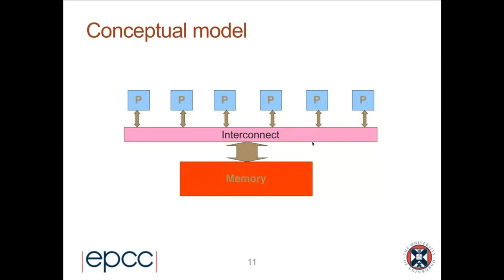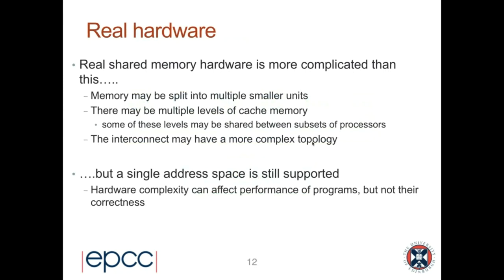The simple conceptual model is that we have a collection of processors with a single global shared memory, and all processors can read and write memory locations. In practice, real hardware is more complicated — memory may be split into multiple units, and there are typically multiple levels of cache memory present. These fast, small cache memories sit between the processor and main memory and contain copies of memory addresses for fast reaccess. Some cache levels may be shared between some processors.